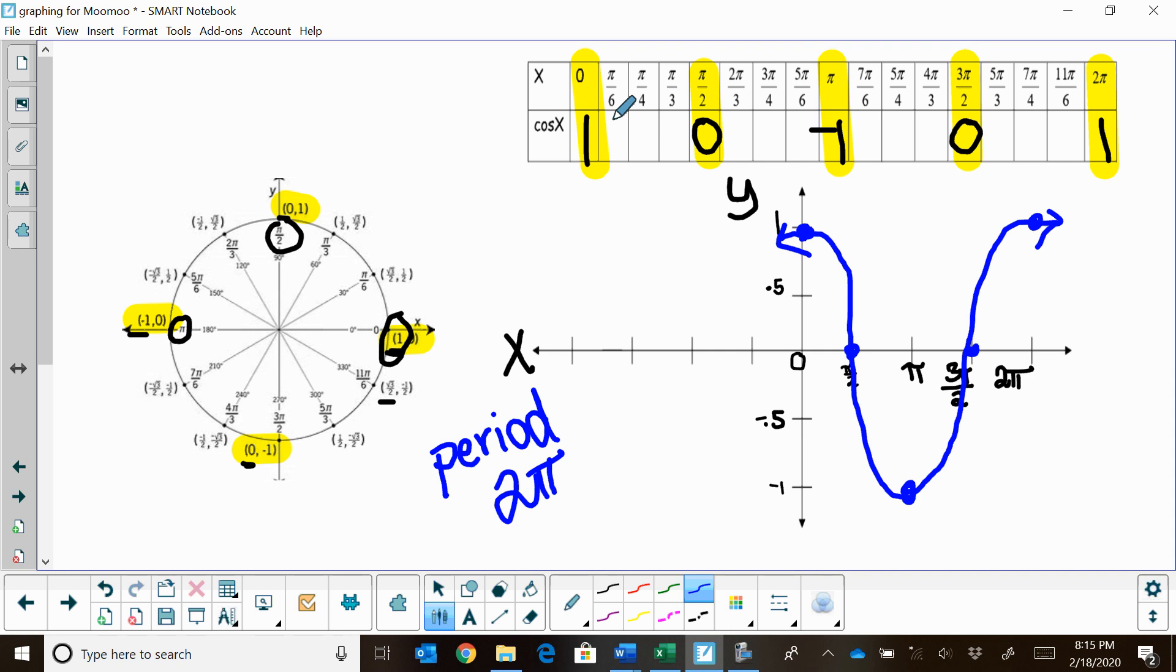Now I'm going to point out a couple values so you can see these. Let's look at π/6. π/6 is the square root of 3 over 2. If you put that in your calculator, that is 0.86. I'm going to put 0.86—it's actually 0.866, but we're just going to use a couple decimal places.